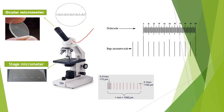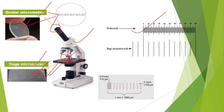Here you can see the instrument known as a microscope. The lens is called the ocular micrometer and it contains a scale. There is also the stage micrometer, which is slide-shaped and also has a scale. You can see both the ocular micrometer scale and the stage micrometer scale.